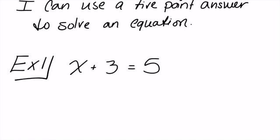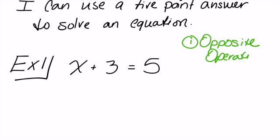X plus three equals five. To solve an equation — any equation — there are three steps you have to follow. The first step is to use the opposite operation. The operations in math are adding, subtracting, multiplying, dividing. If you look here, they are doing X plus three, so right under the plus we're going to write its opposite, which is minus.